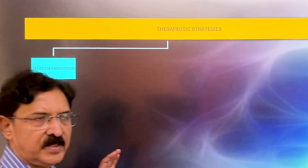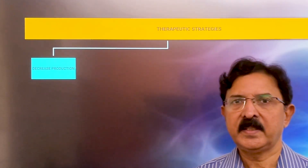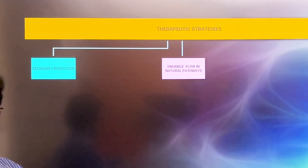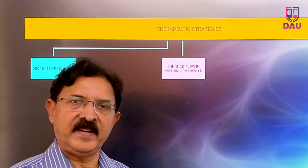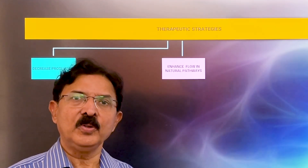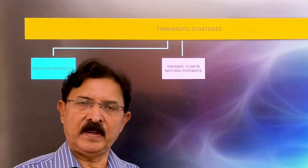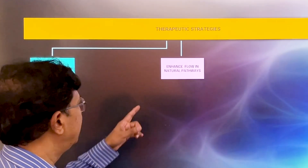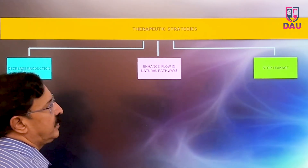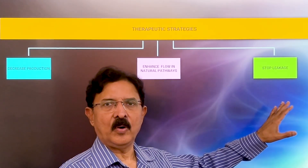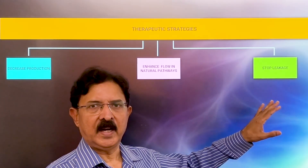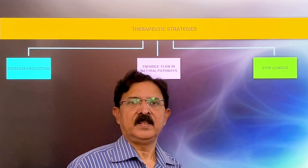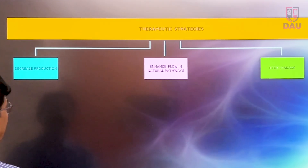The first strategy is to somehow decrease the production of chylomicrons. The next strategy is that whatever chyle is flowing through the lymphatic pathway, it should not flow through the lymphatico-pelvic fistulae, but should flow through the normal passages.